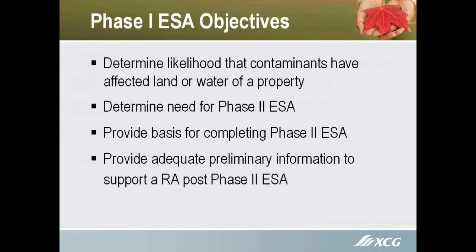The objective of Phase 1 is to determine the likelihood that contaminants have affected land or water at a property. It helps determine the need for a Phase 2 ESA. It also provides the basis for completing a Phase 2 ESA — it should give some indication of where contamination may be and what contaminants to look for. It will also provide adequate preliminary information to support a risk assessment post-Phase 2 ESA, should you decide to go that route as opposed to full-scale remediation.